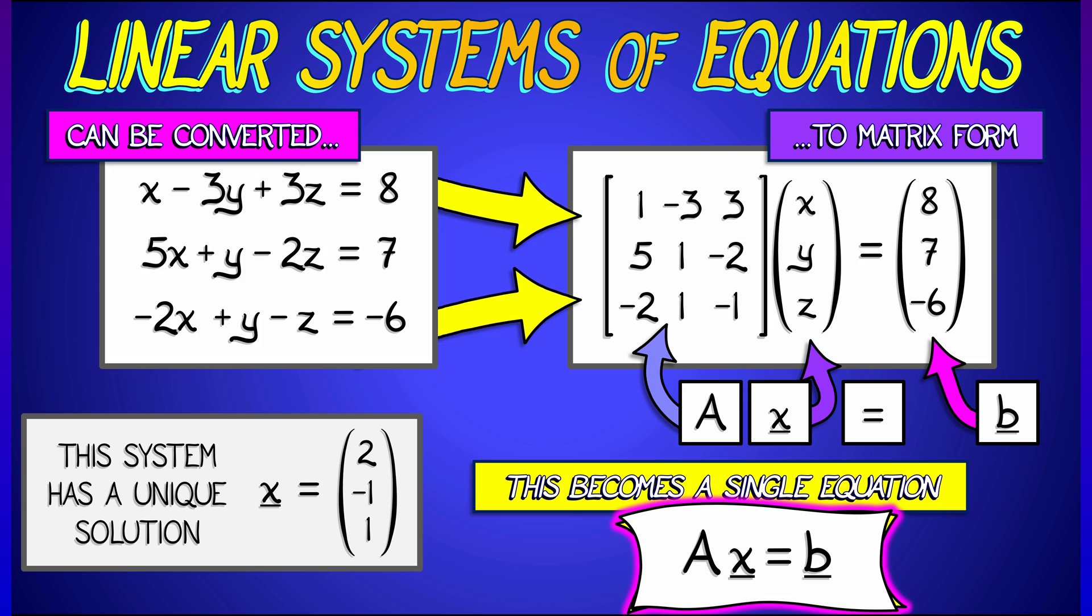Now this system has a unique solution, as you could figure out on your own. x is equal to 2, y is equal to negative 1, z is equal to 1. The vector x is 2, negative 1, 1.